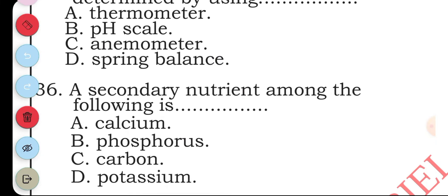Question thirty-six: a secondary nutrient among the following is: A calcium, B phosphorus, C carbon, D potassium. Question thirty-six, the answer is A.